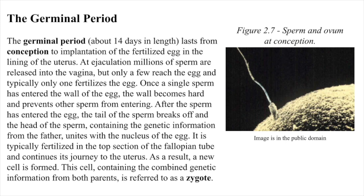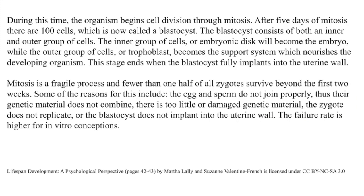At ejaculation, millions of sperm are released into the vagina, but only a few reach the egg, and typically only one fertilizes the egg. Once a single sperm has entered the wall of the egg, the wall becomes hard and prevents other sperm from entering. After the sperm has entered the egg, the tail of the sperm breaks off, and the head of the sperm containing the genetic information from the father unites with the nucleus of the egg. It is typically fertilized in the top section of the fallopian tube and continues its journey to the uterus. A new cell is formed — this cell, containing the combined genetic information from both parents, is referred to as a zygote. During this time, the organism begins cell division through mitosis. After five days of mitosis, there are 100 cells, which is now called a blastocyst. The blastocyst consists of both an inner and outer group of cells.